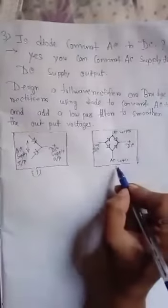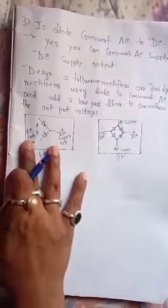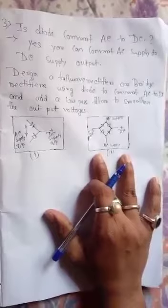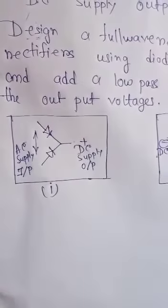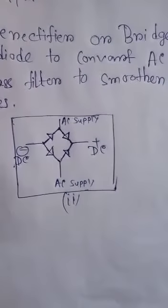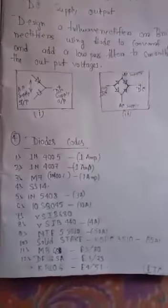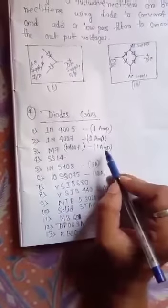Look at these pictures. Diode codes — and add a low pass filter.